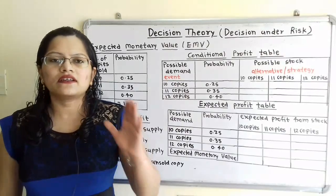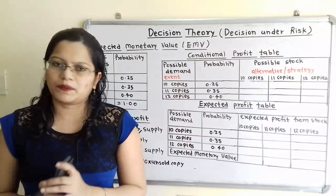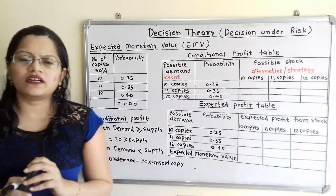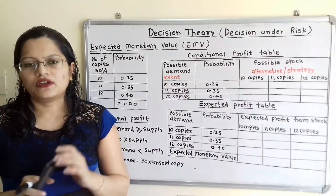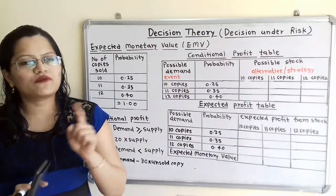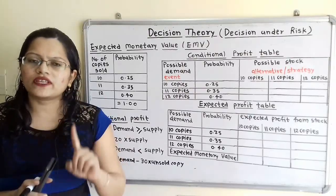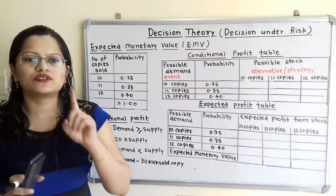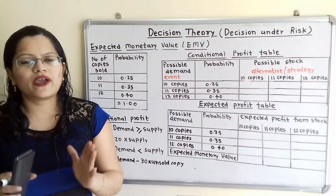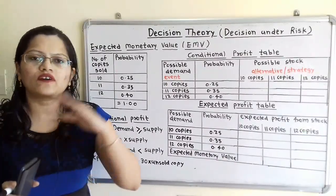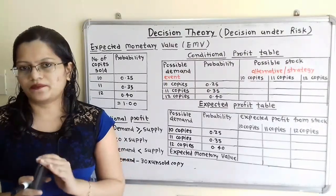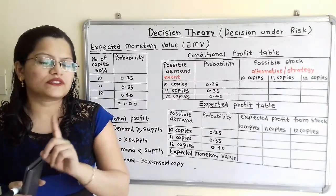To decide the number of copies the newspaper boy should order, we calculate expected monetary value. For one copy, purchase cost is 30 paise and selling price is 50 paise. So for each sold copy, profit is equal to 20 paise. But for unsold copies, the newspaper boy cannot return them, so the purchase cost is a loss. For one unsold copy, there is a loss of 30 paise.